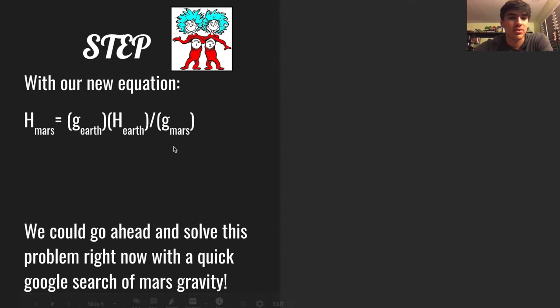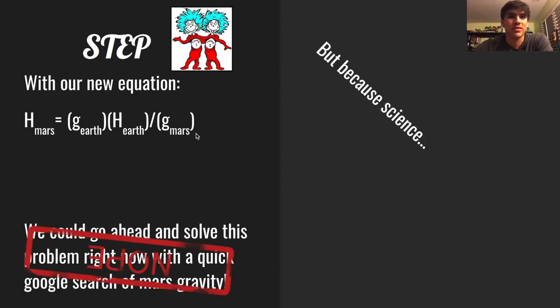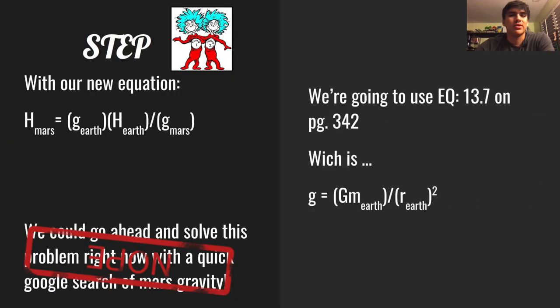Step two: with this new equation we can solve for this because these are all knowns. We know Earth's gravity is 9.81, the height is 15 meters on Earth, and Mars' gravity. But we can't just look it up on Google because we're in physics and they want us to learn this.